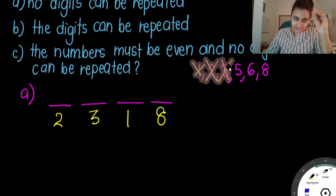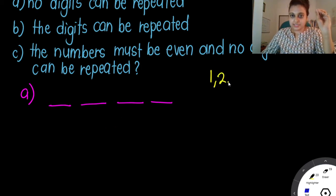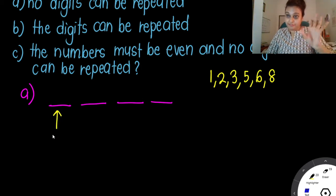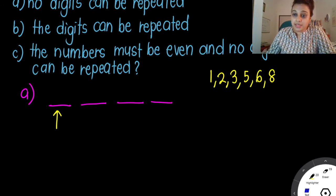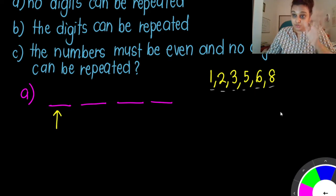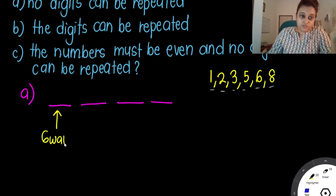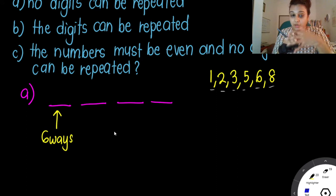Now you tell teacher: we have 1, 2, 3, 5, 6, 8, right? If I'm going to arrange a number at the first spot, the first place, how many ways can I arrange? How many digits? 1, 2, 3, 4, 5, 6 — so I can choose 6. So there are 6 ways I can arrange. I can choose maybe number 2, maybe number 1, I can choose 3, 5, 6, or 8 — any one of them.